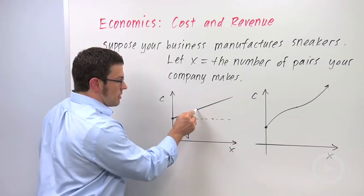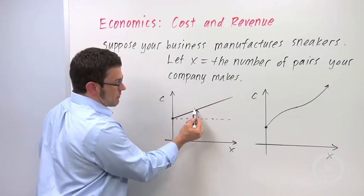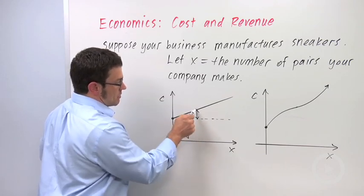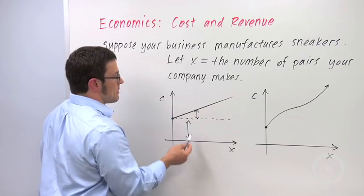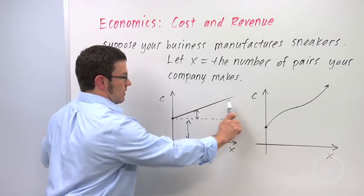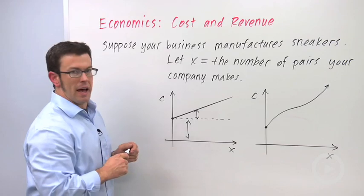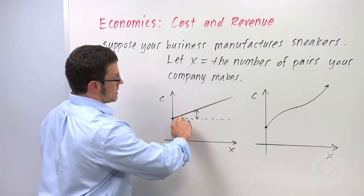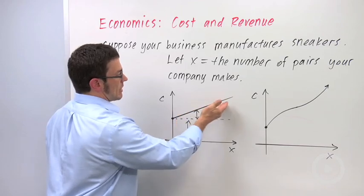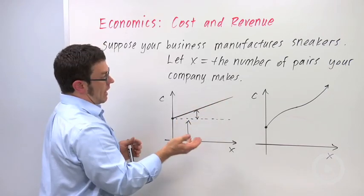And then the additional cost is called the variable cost. This is the cost of producing a certain number of sneakers, so it's variable cost plus fixed cost. And this model, this linear model, assumes that the cost stays constant. For example, the cost of materials does not go up the more you buy them or go down.